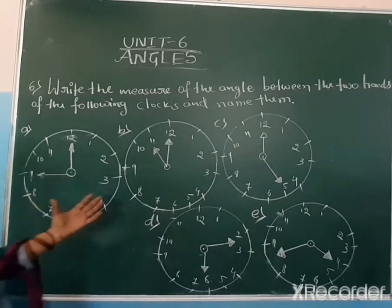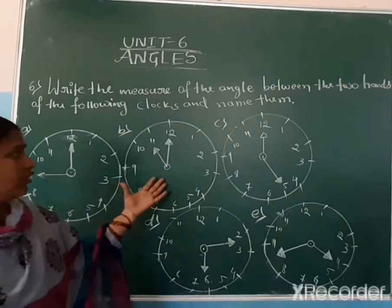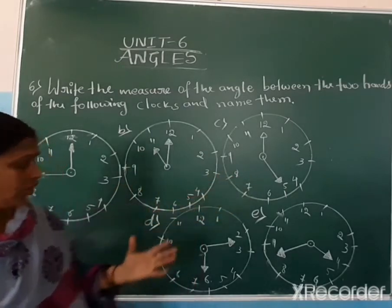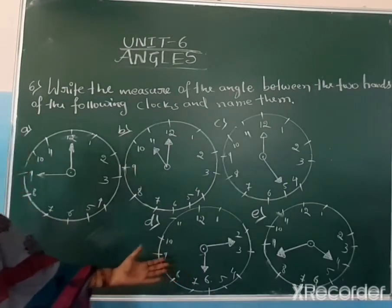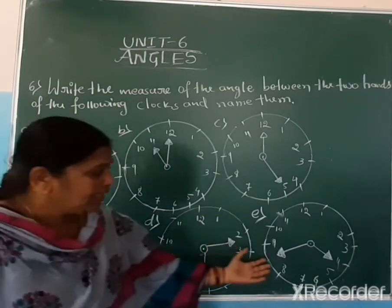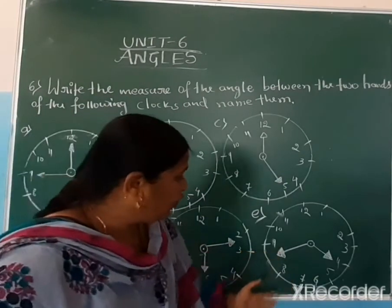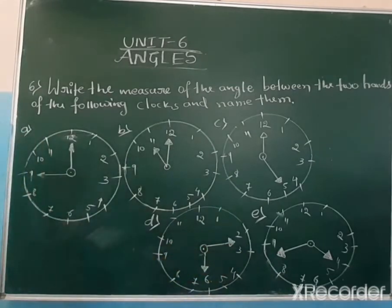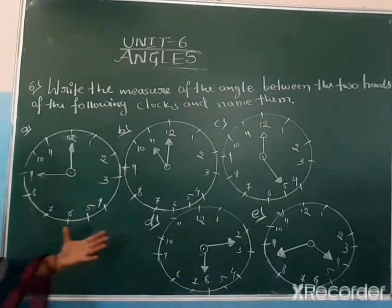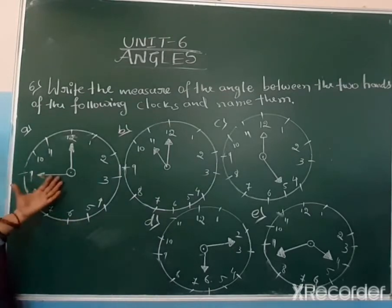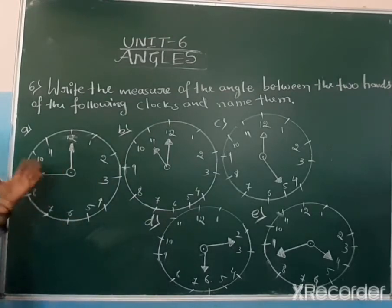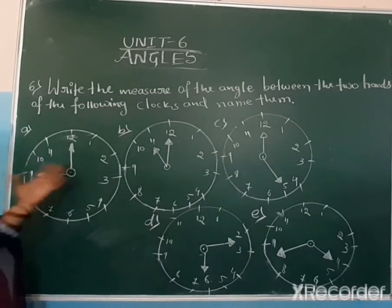The clocks show: 9 o'clock, 11 o'clock, 5 o'clock, 2:30, and 4:45 PM. So in that time, what angles are formed in the clock?